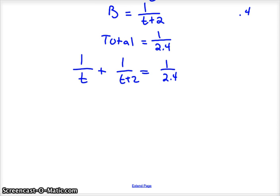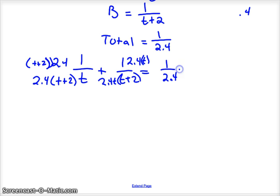That's their total speed, their total velocity. So we've got this really cool rational equation, so we're going to get common denominators. This needs a 2.4 and a t plus 2, so you need that on both sides. This needs a 2.4 and a t, and this side needs the t and the t plus 2.